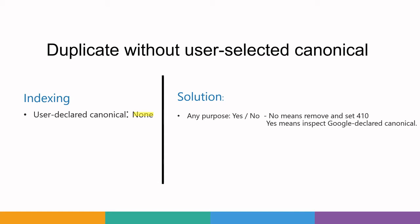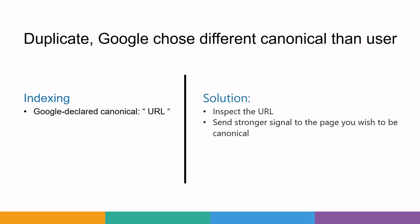Sometimes Google itself takes some other canonical URL and shows it. You can inspect that URL, and if you're okay with it, you can use that same URL as your user-declared canonical URL. Or if you find the page is not valuable to users and not valuable for your website, you can remove that page and not worry about the issue.